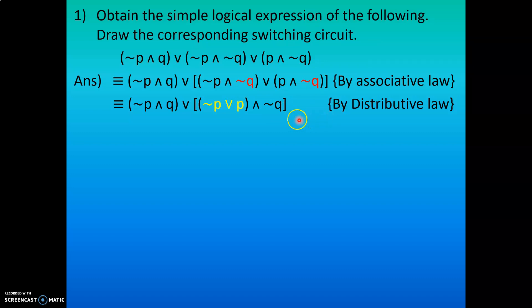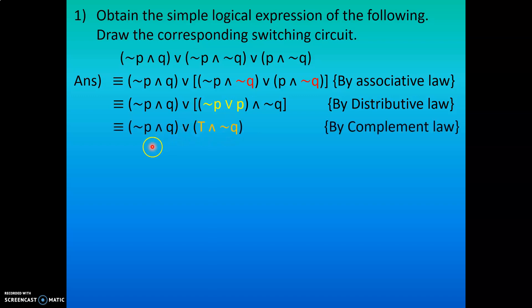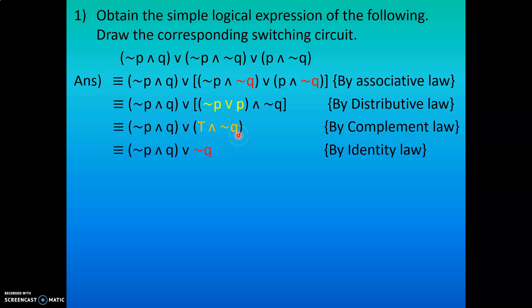By distributive law this is verified. In the next step, (¬P ∨ P) inside the bracket becomes T (true) by complement law, giving (¬P ∧ Q) ∨ (T ∧ ¬Q). Then by identity law, T ∧ ¬Q simplifies to ¬Q, since true and any statement is the statement itself. So we now have (¬P ∧ Q) ∨ ¬Q, with all remaining terms the same.